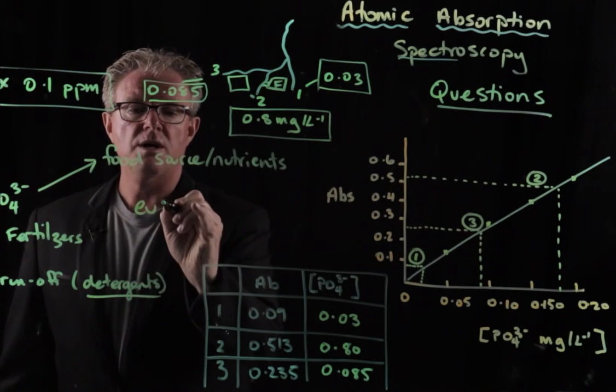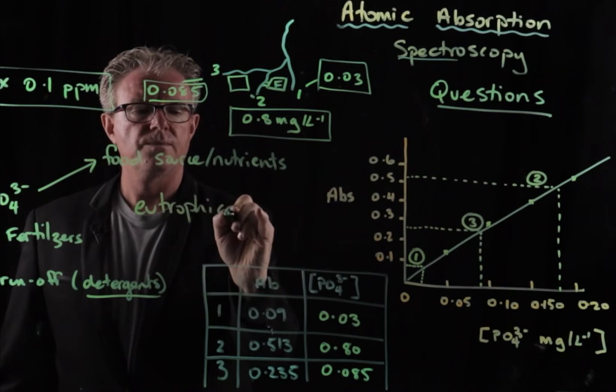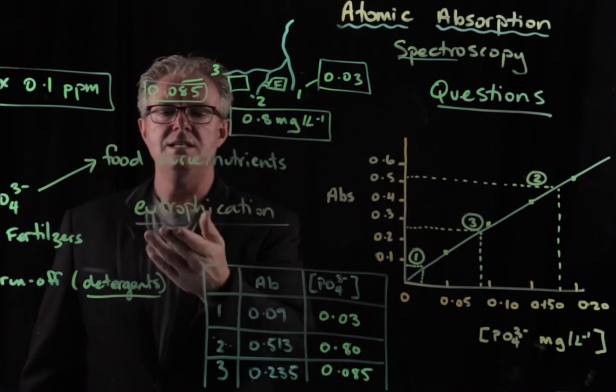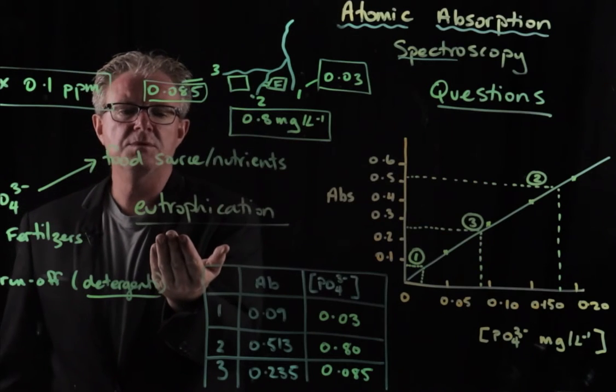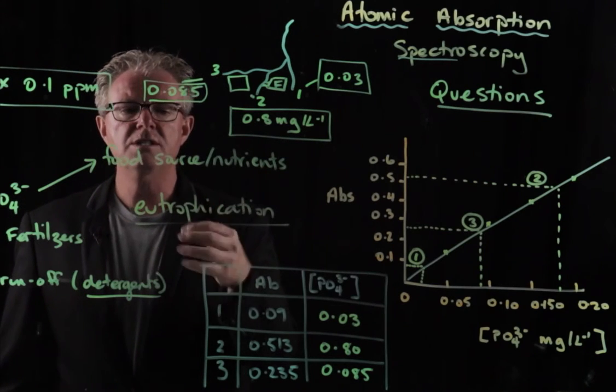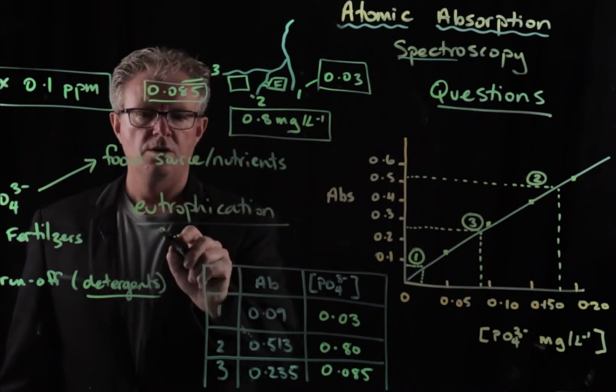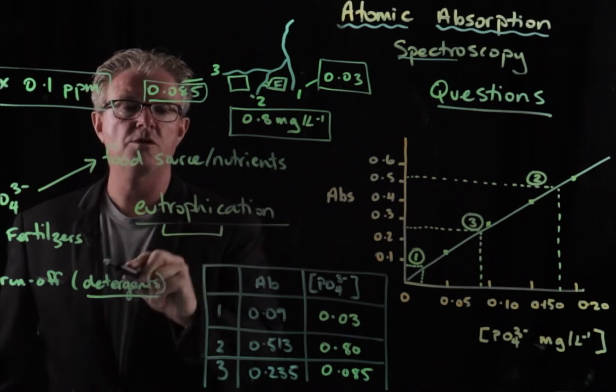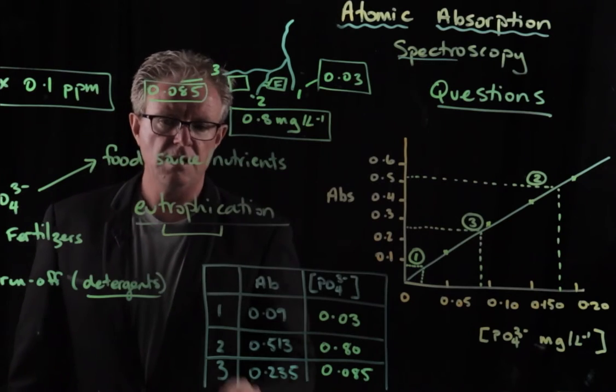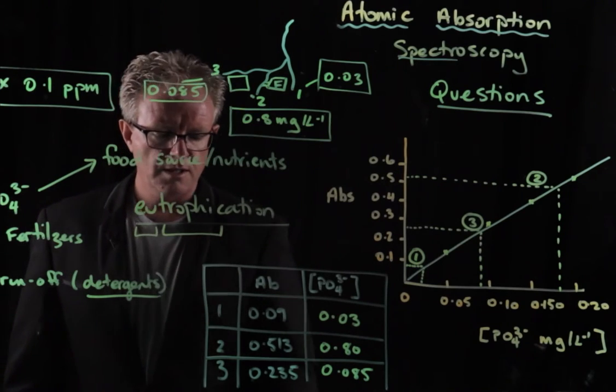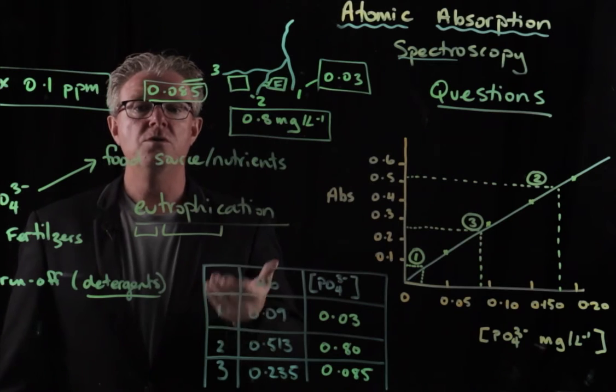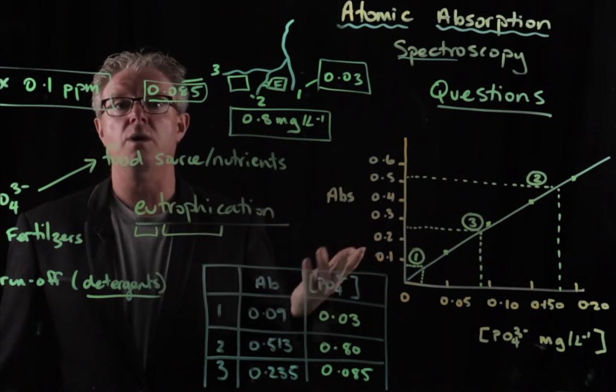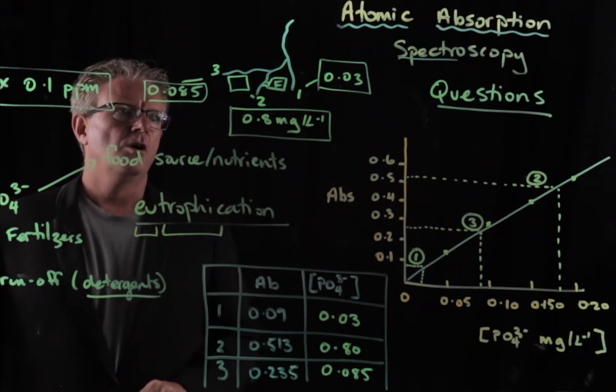And I'll just write down eutrophication. That's how you spell it. So that is the enhancement of nutrients in the body. Trophic. For you bio people, understand that troph means food. And eu means good. And so if we have a good supply of food, we then have an over-nutrient supply. And therefore, algae go crazy. It's like a party.